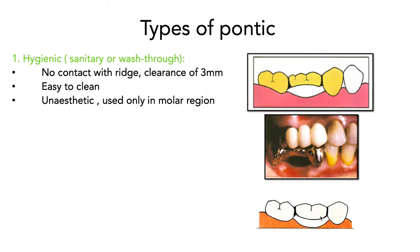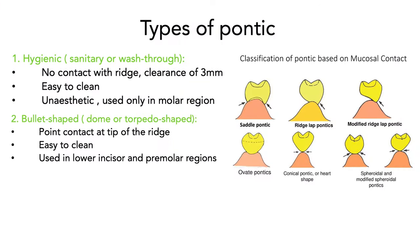The first type of pontic design isn't really done anymore but you might see it in a patient with an old bridge — it's called the sanitary pontic design. There is a large amount of clearance from the ridge, meaning the patient can clean the area easily and it serves a functional purpose, but it has very poor aesthetics. If you ever needed to do this type of pontic, it's preferred to follow the contour of the ridge. The next design is called the dome-shaped pontic, where its tip sits on the crest of the ridge, and the modified version is called the spheroidal shape, which has more contact onto the ridge.